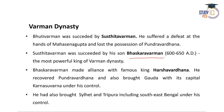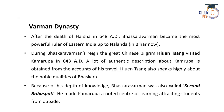Susthitavarman was succeeded by his son Bhaskarvarman, the most powerful and famous ruler of the Varman dynasty, who ruled from 600 to 650 AD. Many examination questions are asked about this period. Bhaskarvarman made an alliance with the famous king Harsha Vardhana, recovered Pundravardhana, brought Gauda with its capital at Karnasuvarna under his control, and also brought Sylhet, Tripura, and Southeast Bengal under his control.